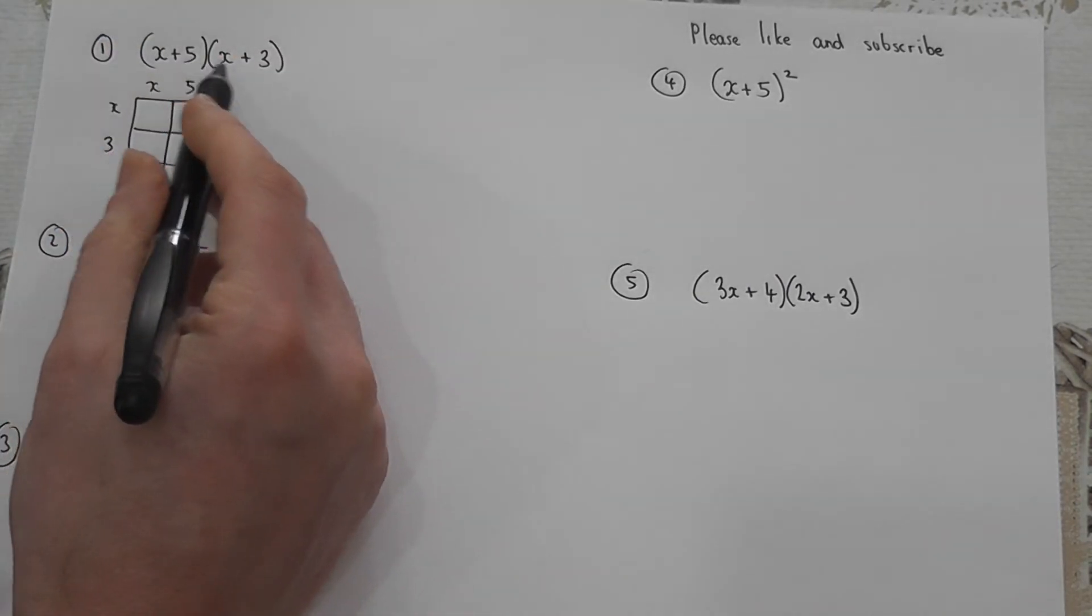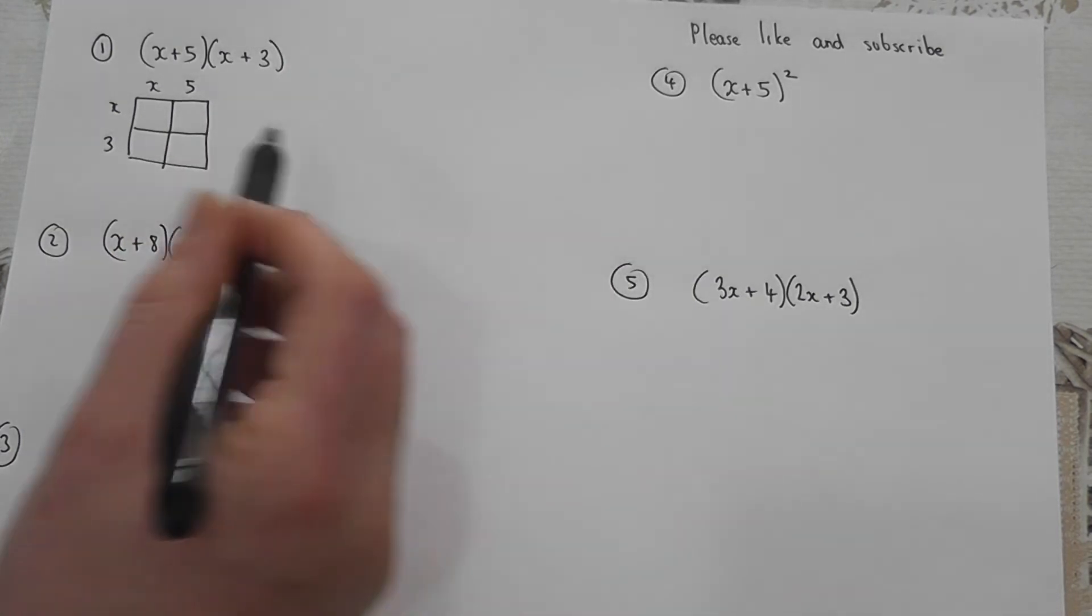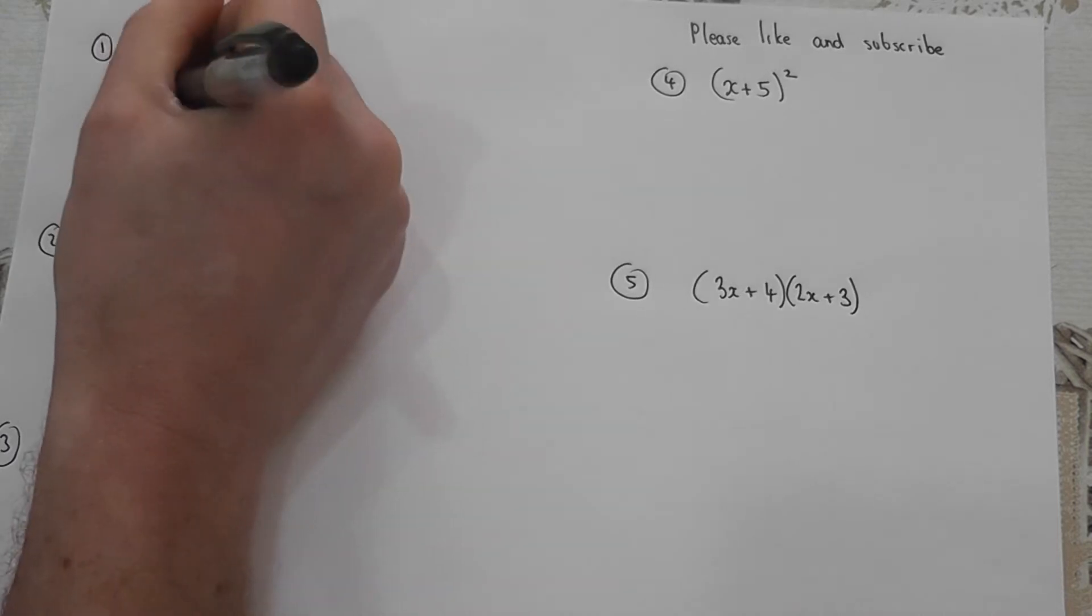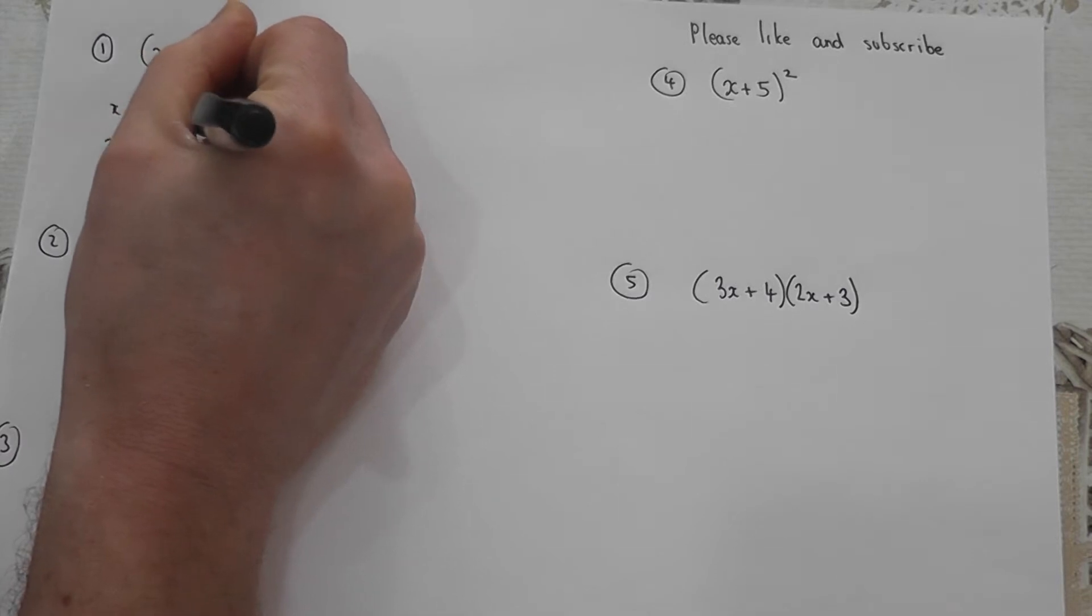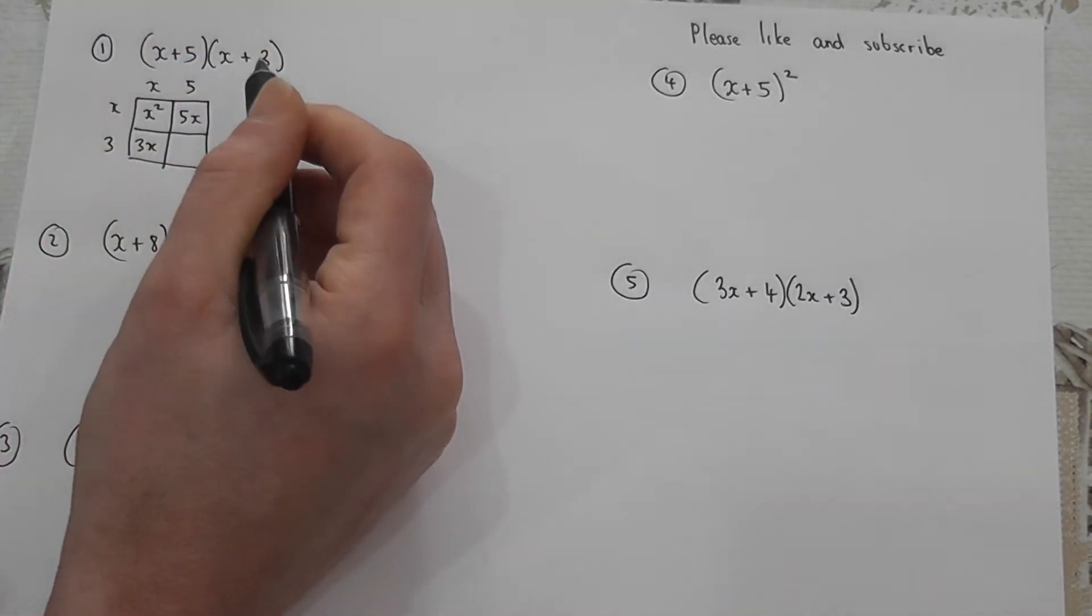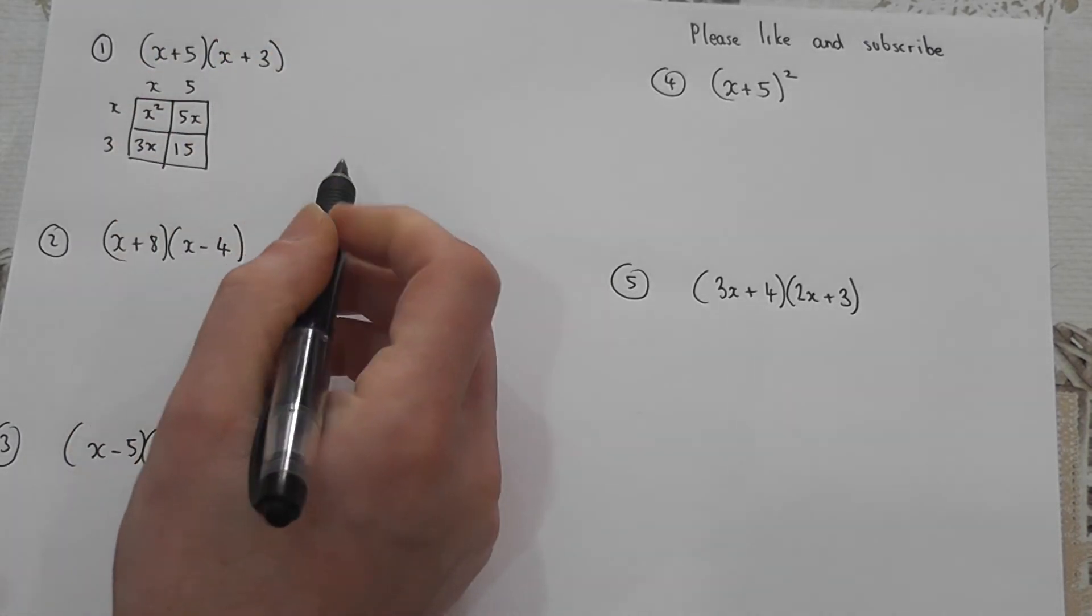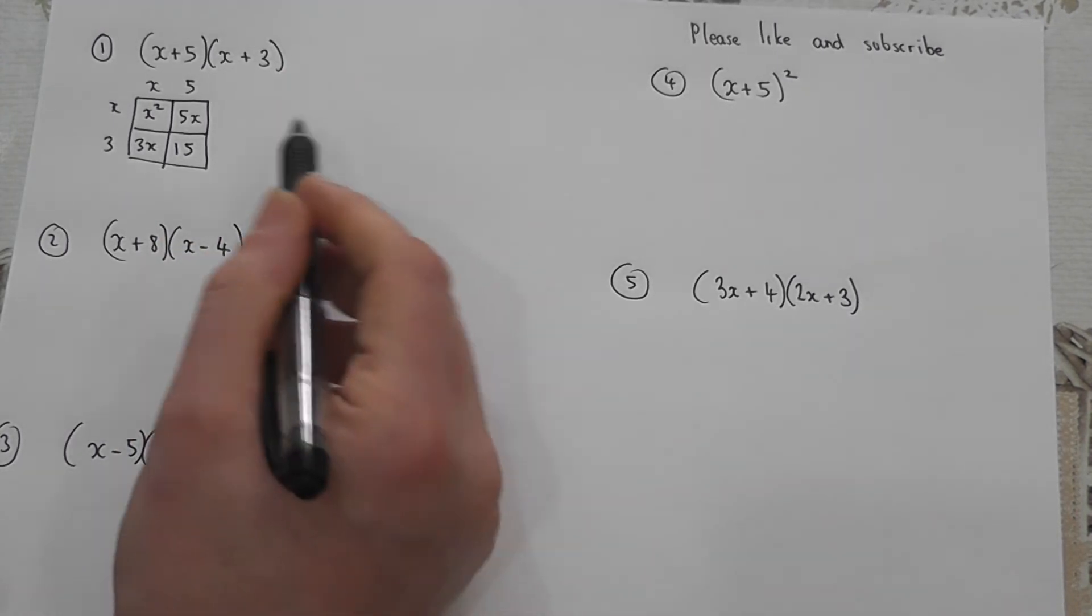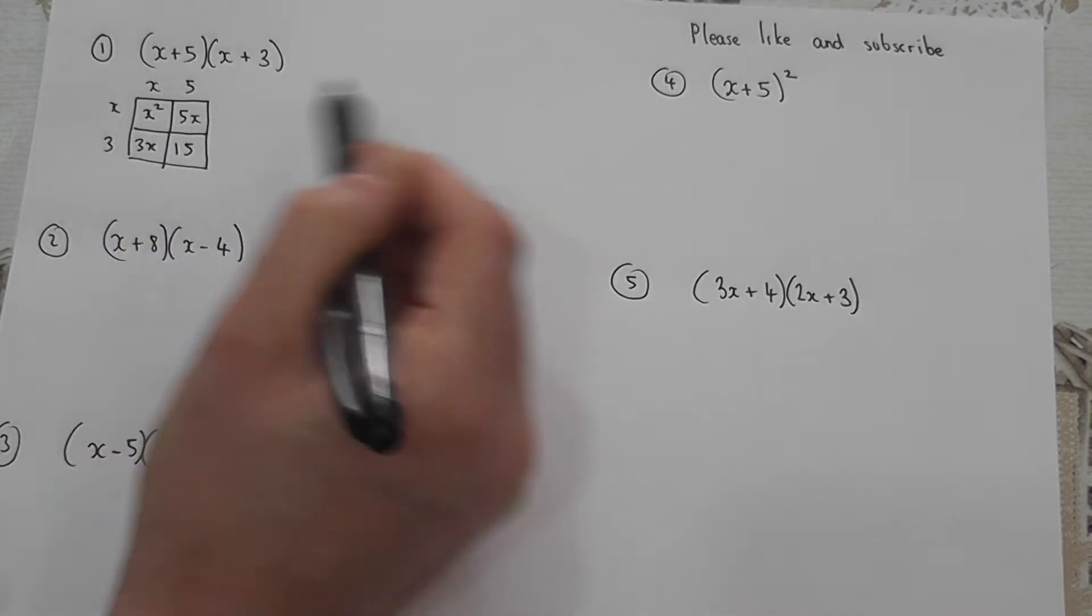And brackets in this case means multiply and to work out the four answers that make up the answer we have to basically do four multiplications. So x times x is x squared. 5 times x is 5x. 3 times x is 3x and the key thing here is 5 times 3 which is 15. We're multiplying to work out the four elements that go in there.